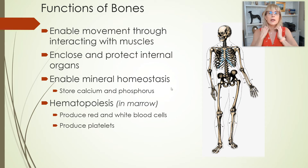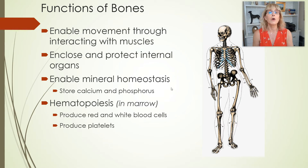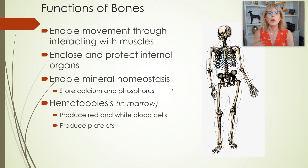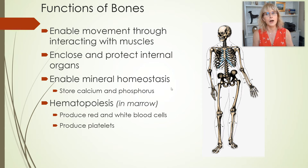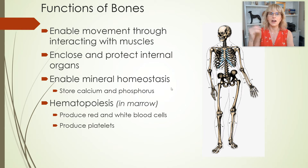We also spoke about mineral homeostasis — bones are the body's way of storing extra calcium and phosphorus. We need calcium for every beat of the heart and every twitch of every muscle, and we need phosphorus to make DNA and RNA.